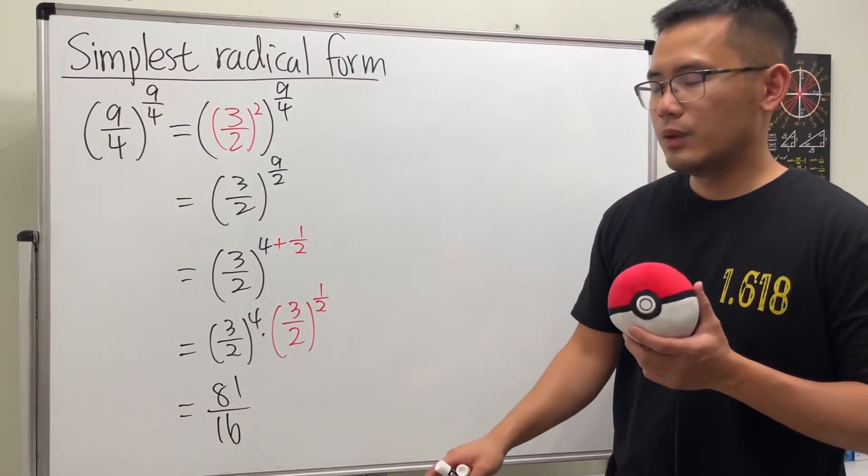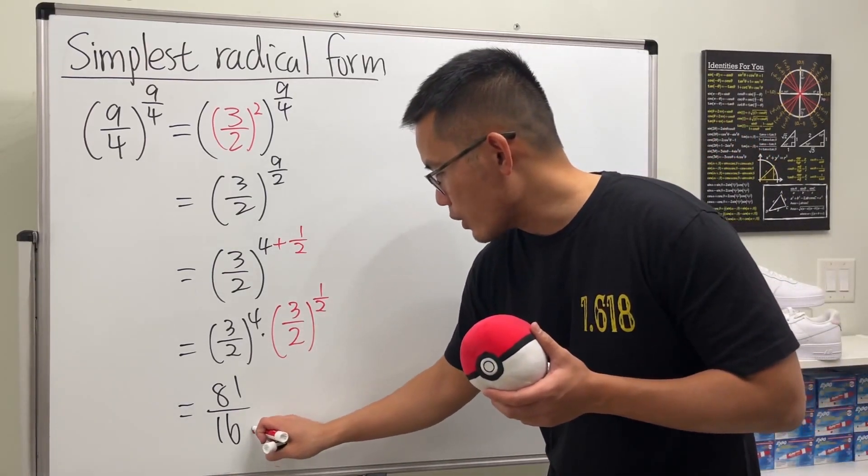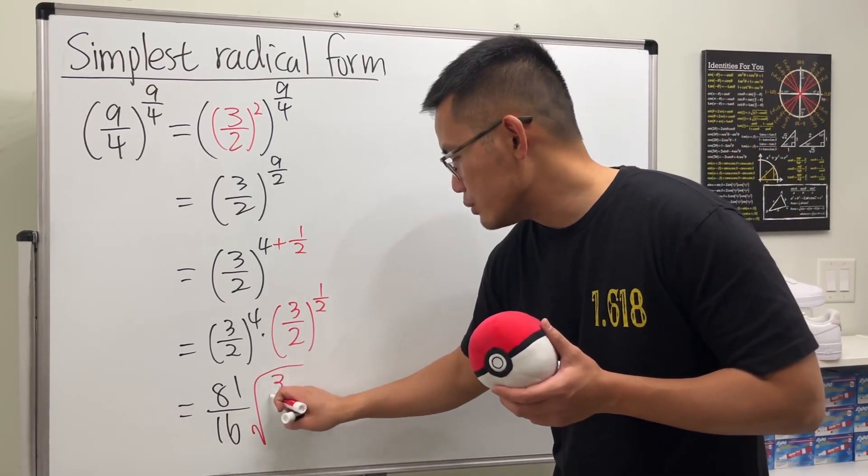But what's this? Well, we have the 1 half power, that becomes the square root. And then inside, we have 3 over 2.